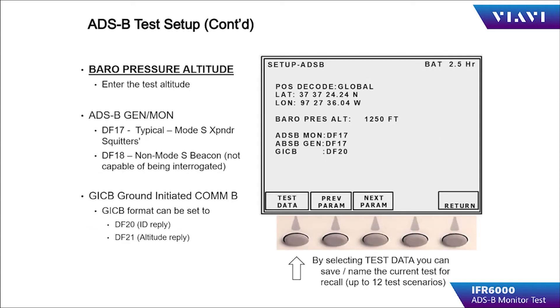Enter the test altitude that you intend to use. If you are not using an air data test set, simply put in the field elevation. DF-17 vs DF-18.